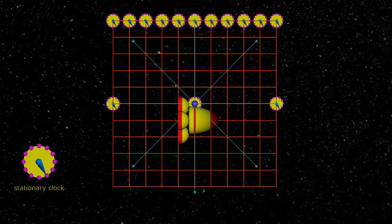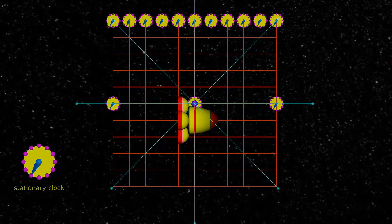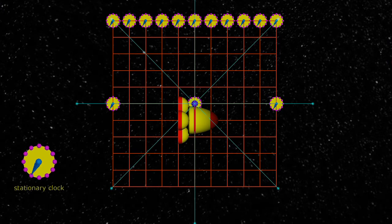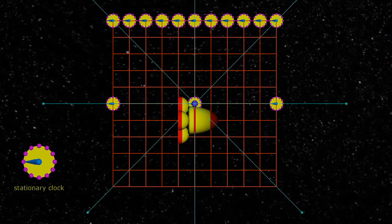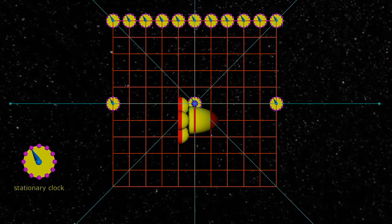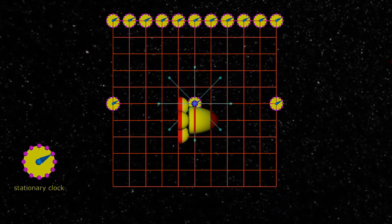The diagonal photons reach their last intersection with the clock on seven. All these readings we have just taken are relative to the yellow spacecraft, its coordinate system and its time.